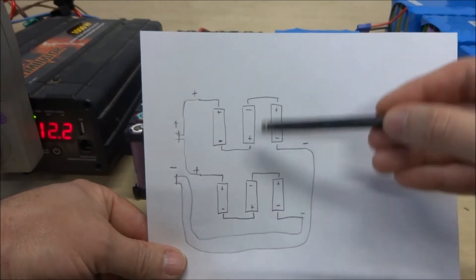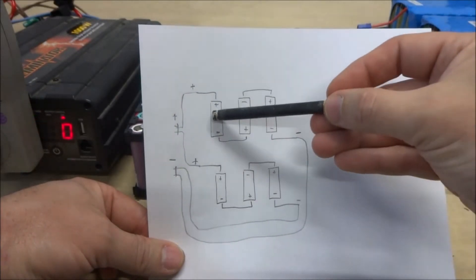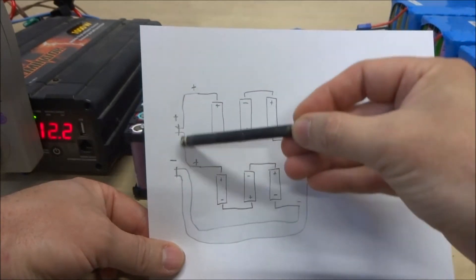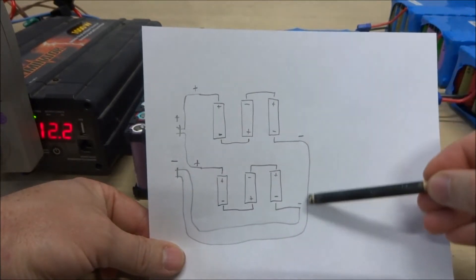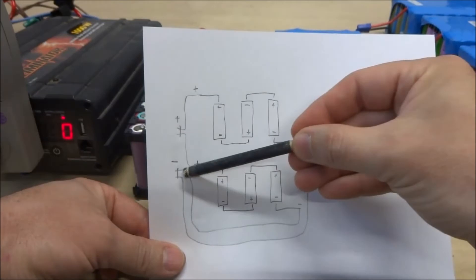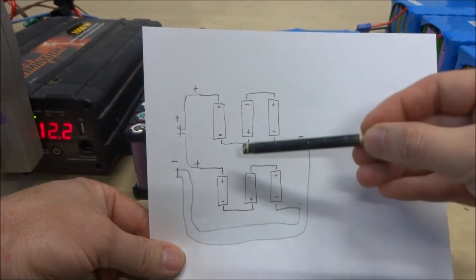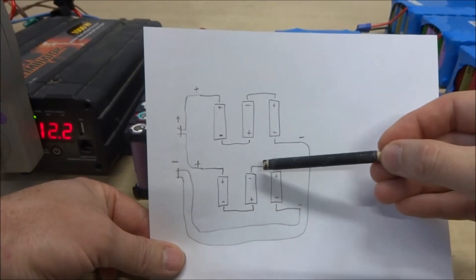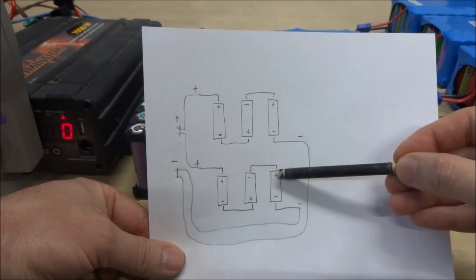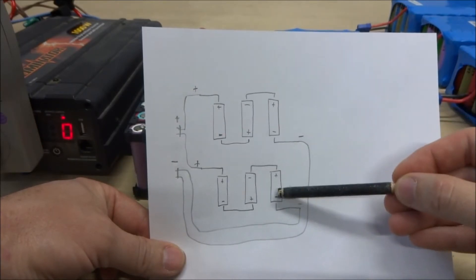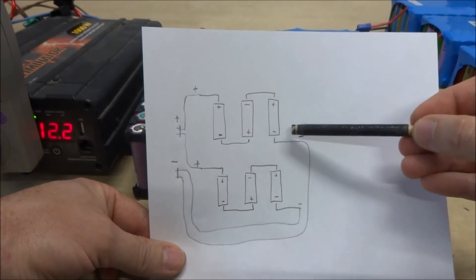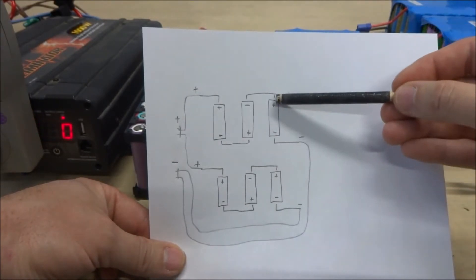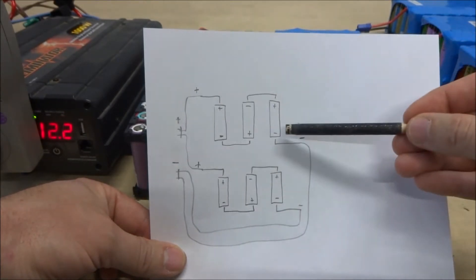Now, with two packs as you have here, in the end the positives get connected together and the negatives get connected together. However, these intermediate points never get connected. So if you have a group of cells, let's say this group of cells is a little weak compared to this group of cells, when you do a discharge the packs become unbalanced.